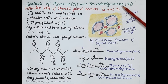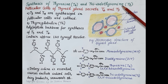Hello students, today we are going to understand the process by which thyroid hormones, namely thyroxine (T4) and triiodothyronine (T3), are synthesized by the thyroid gland. As we all know, the thyroid gland secretes T3 and T4.